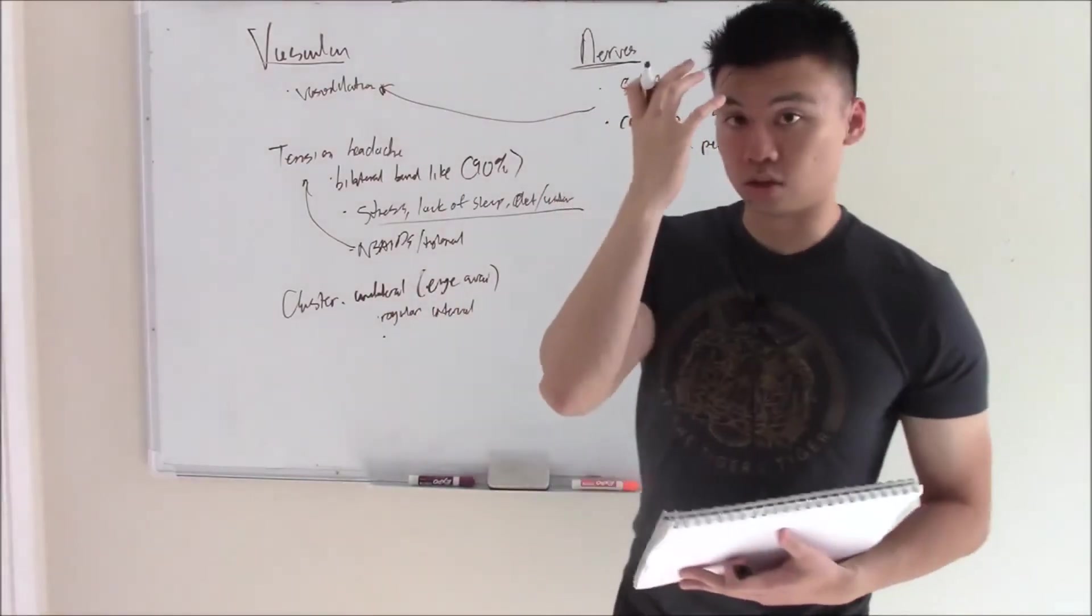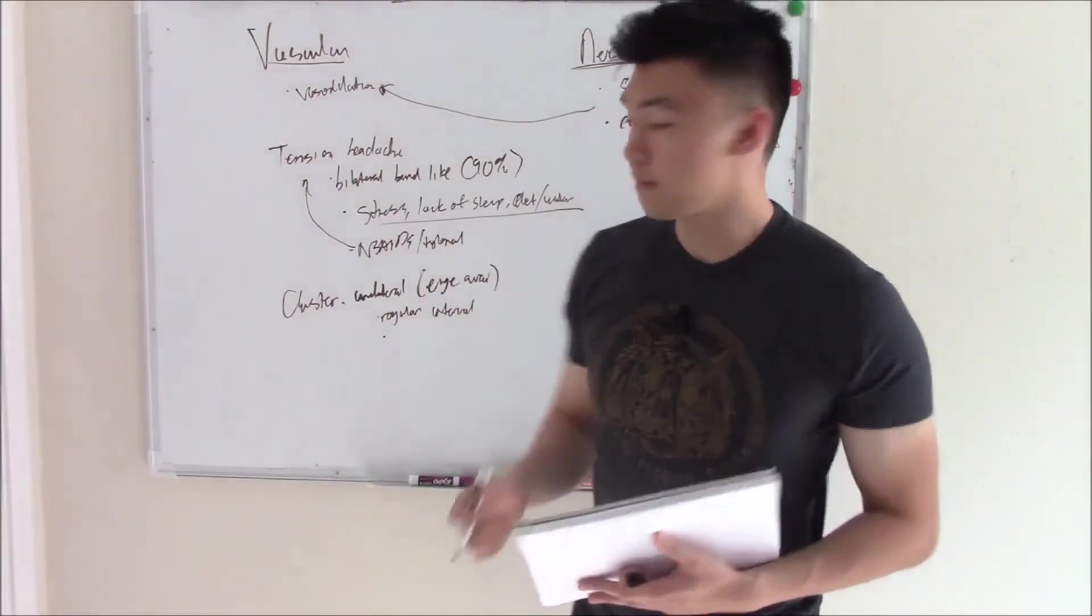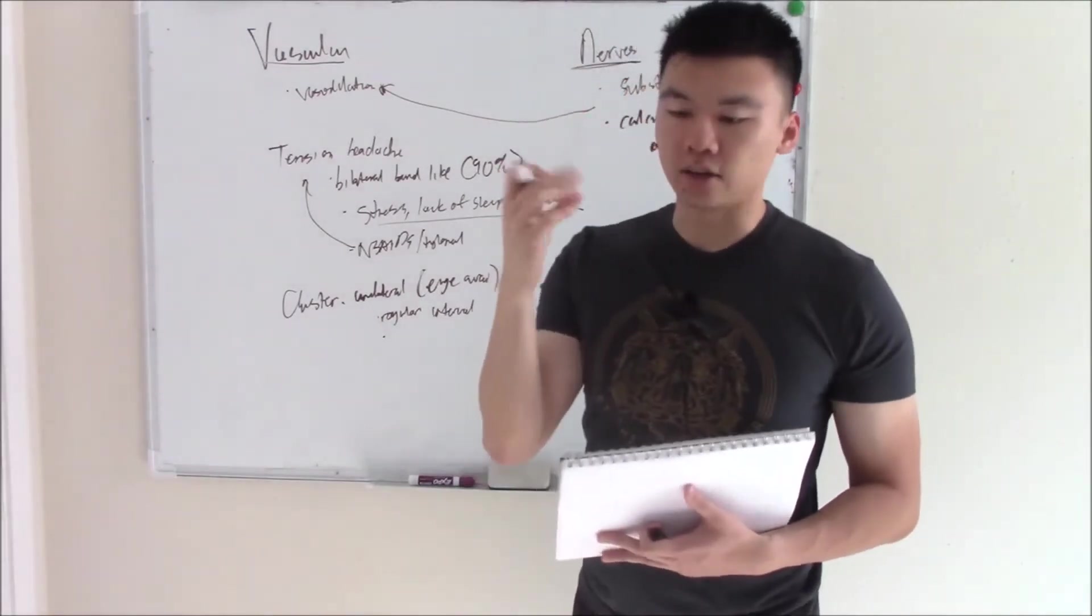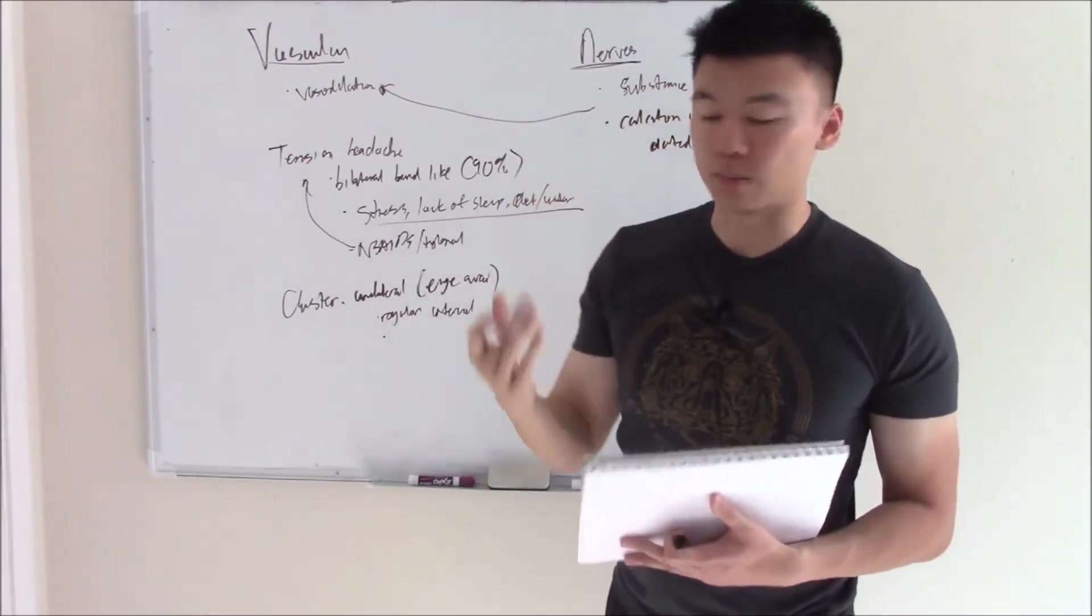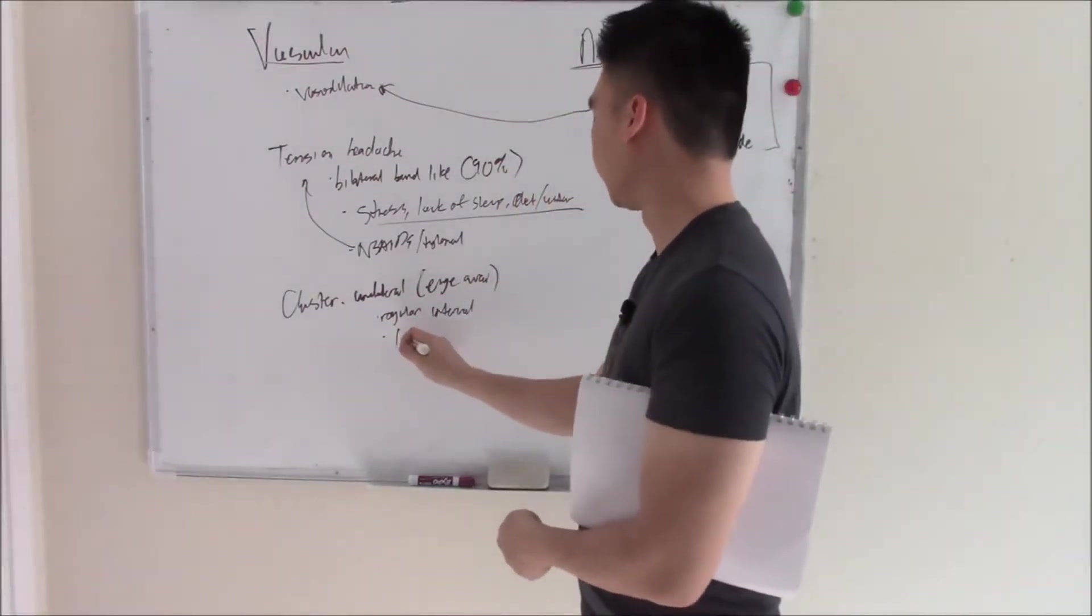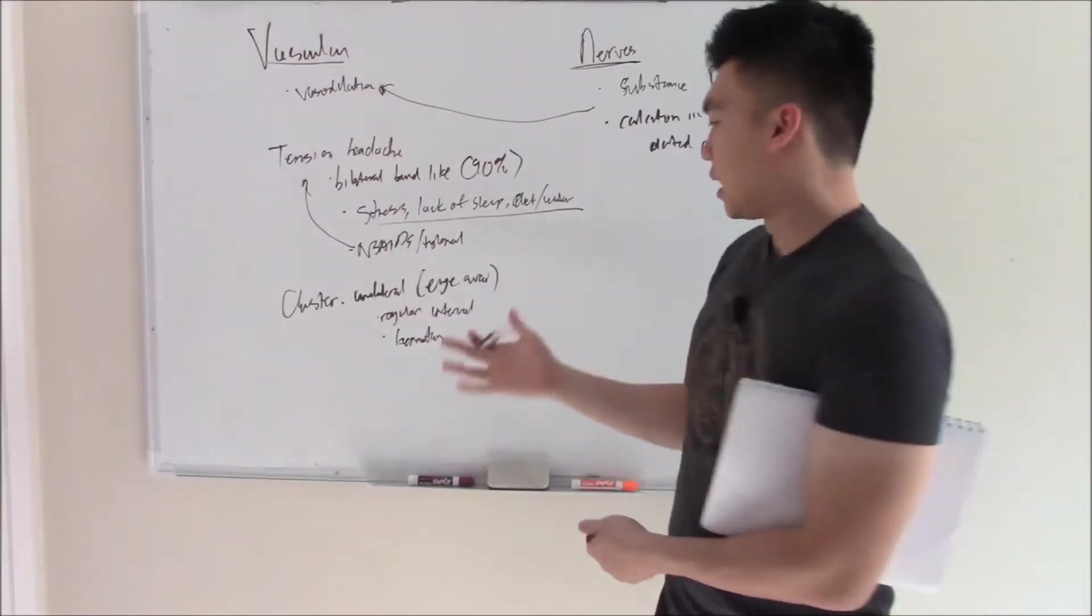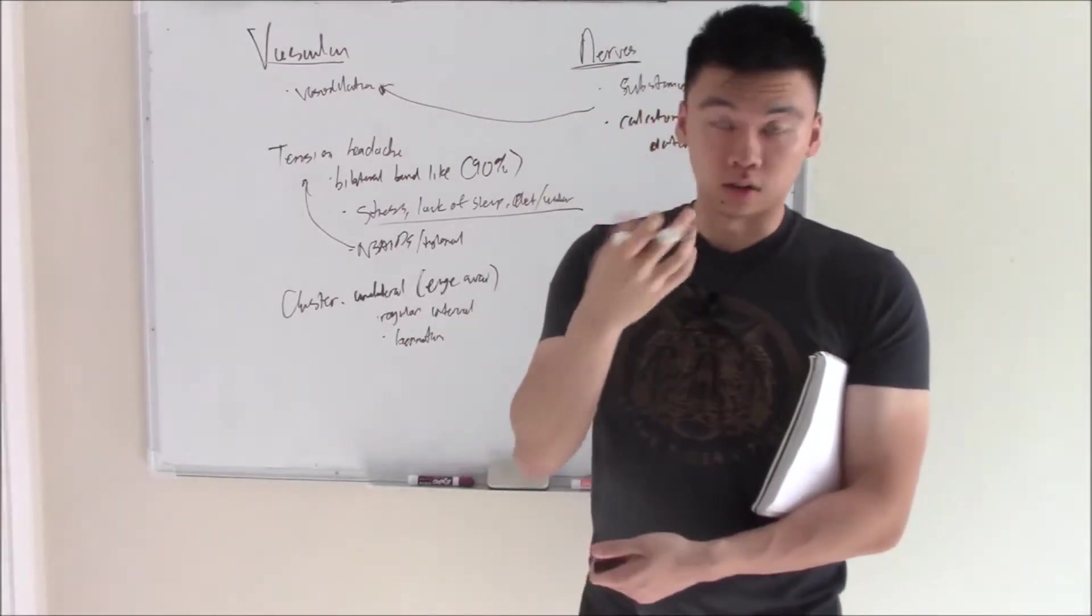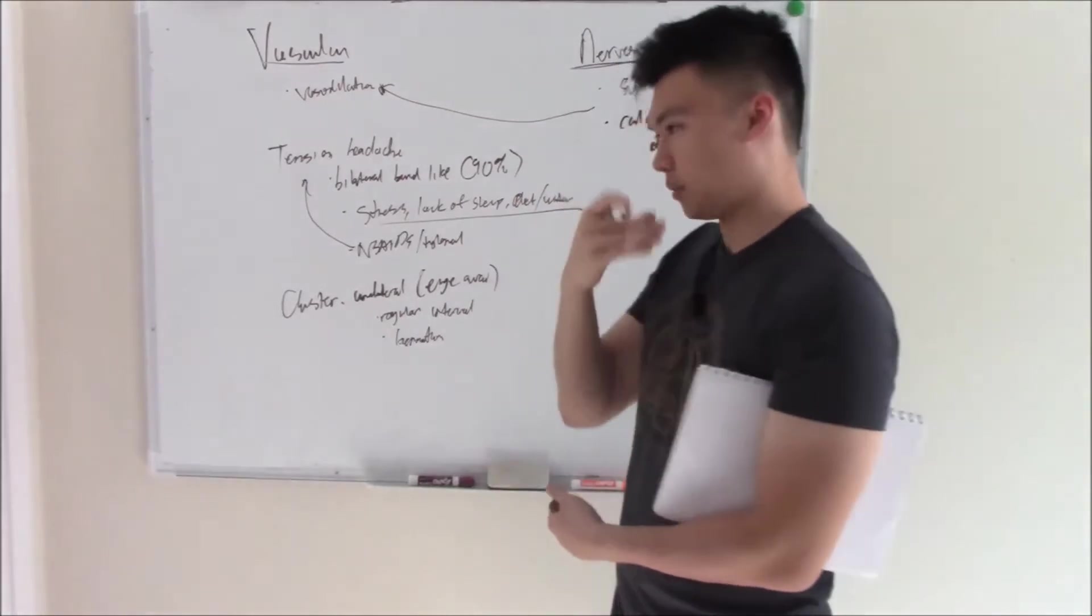Some signs: you have that unilateral pain around the eye. And because it affects the eye, you can have crying or lacrimation. So write lacrimation, that's a big one. And tears drain into your nose, and you can have rhinorrhea, so basically a runny nose.